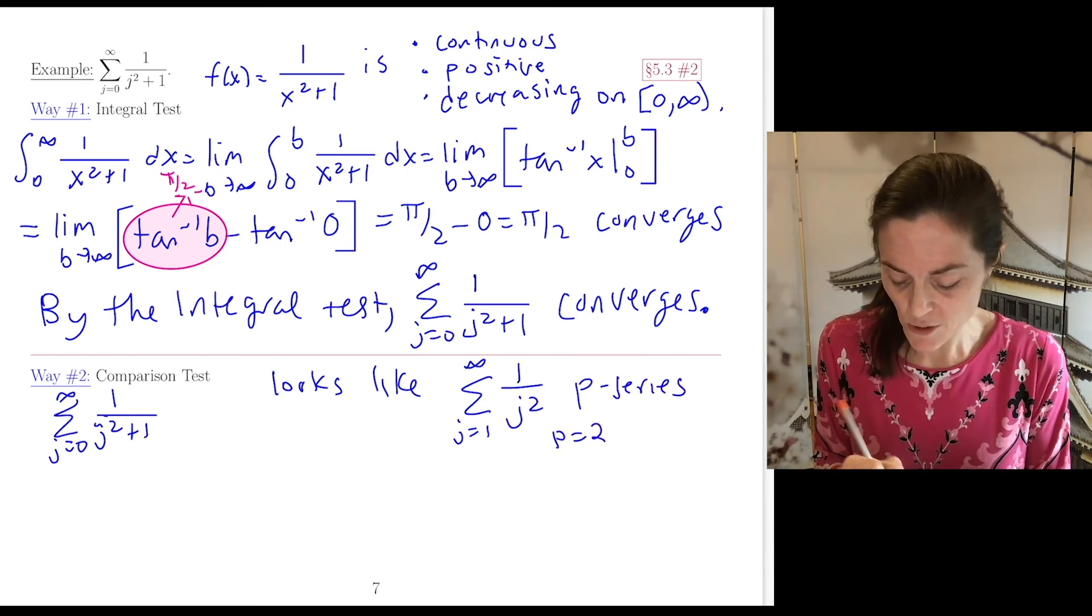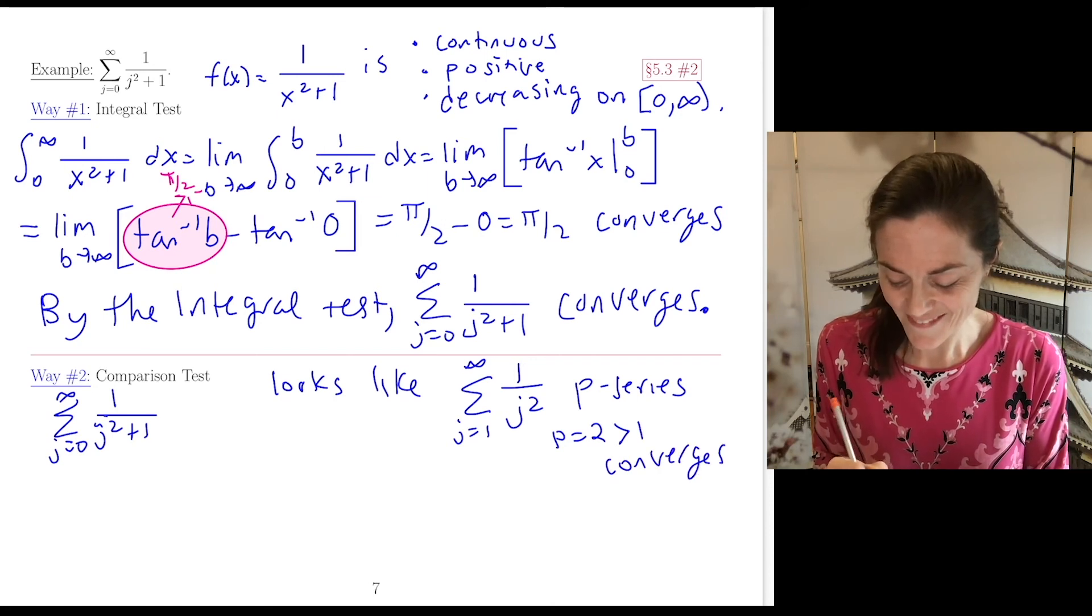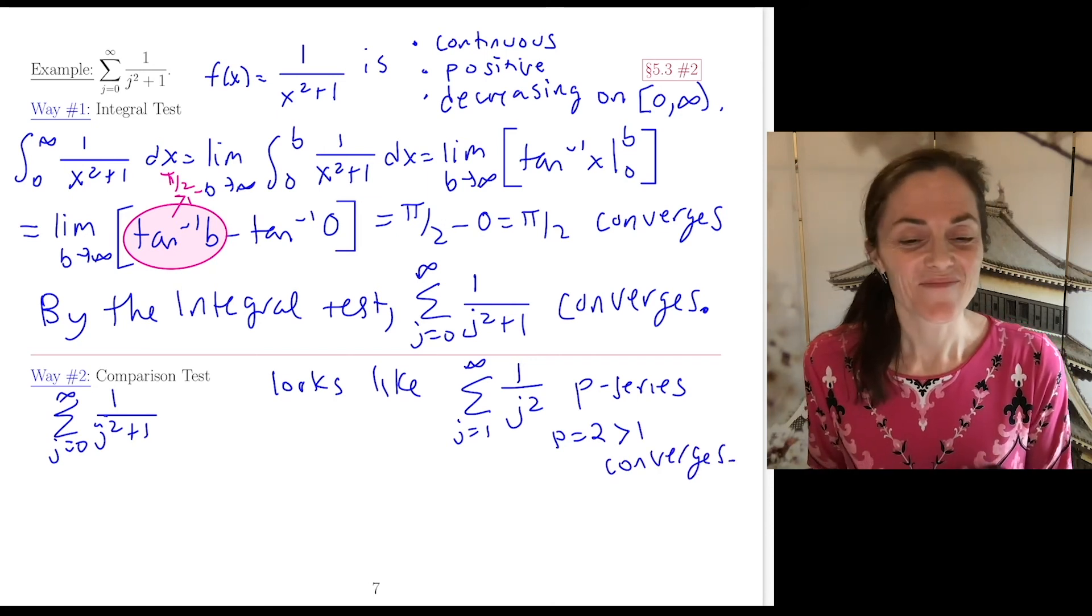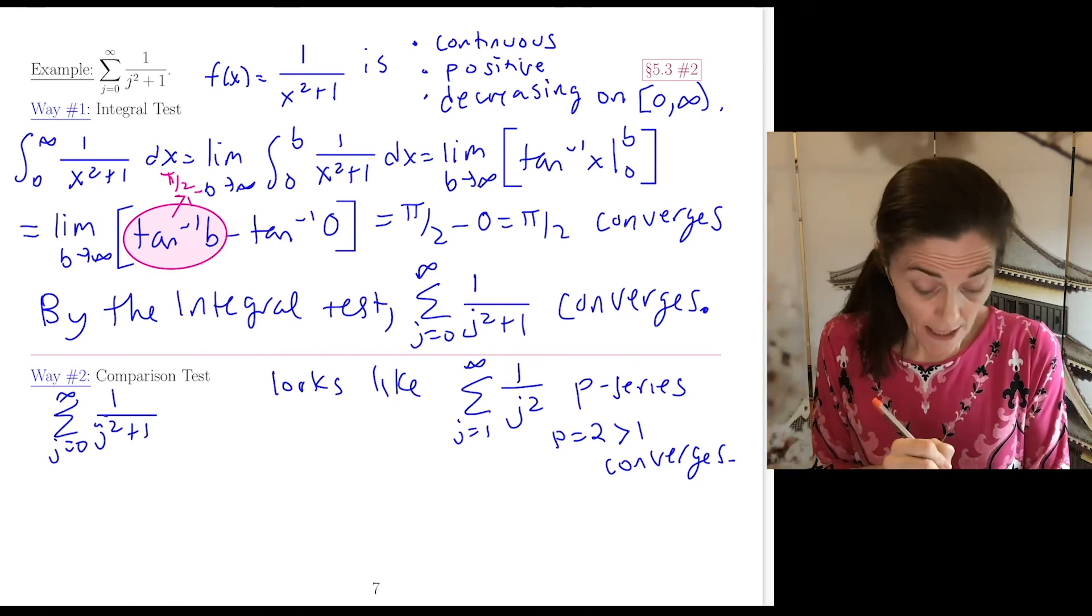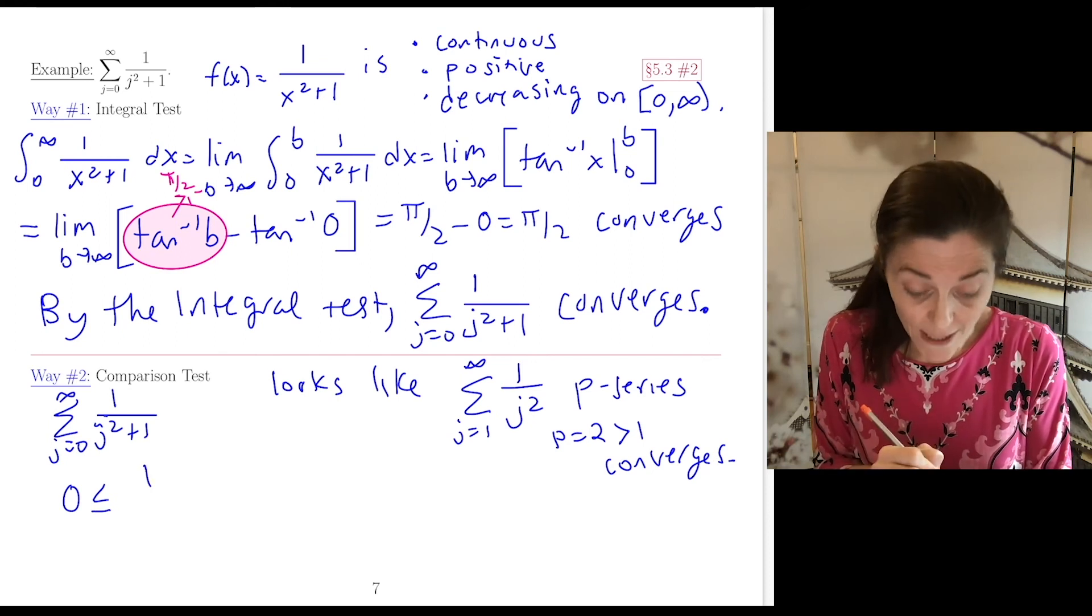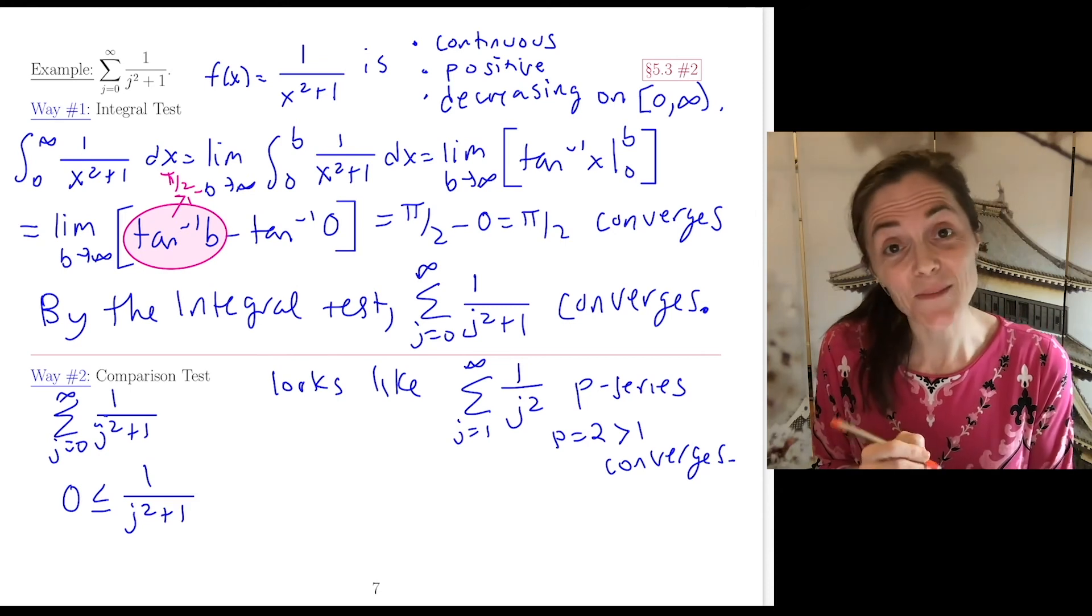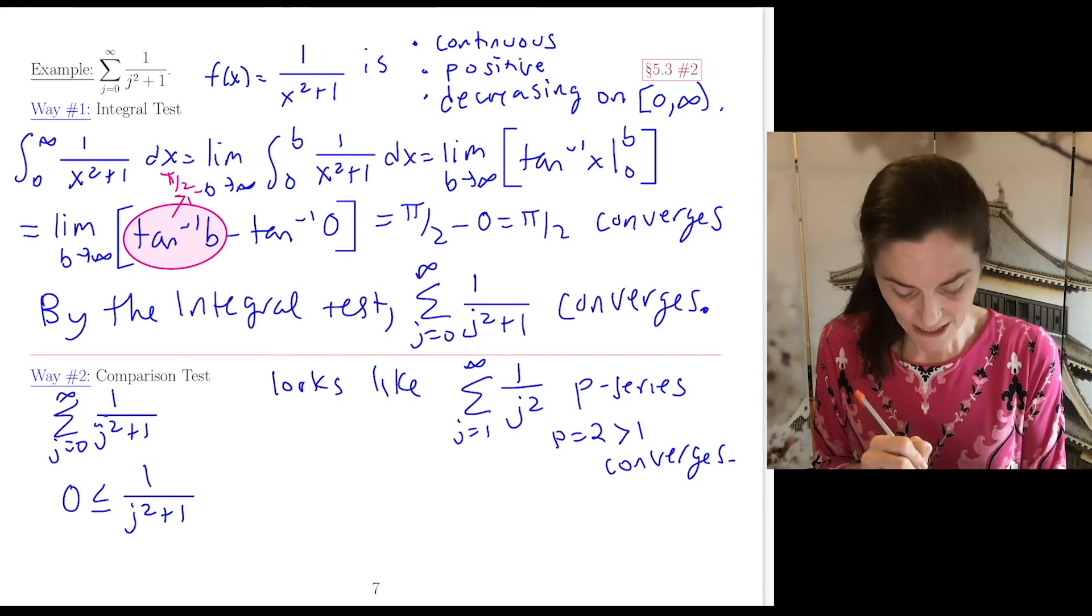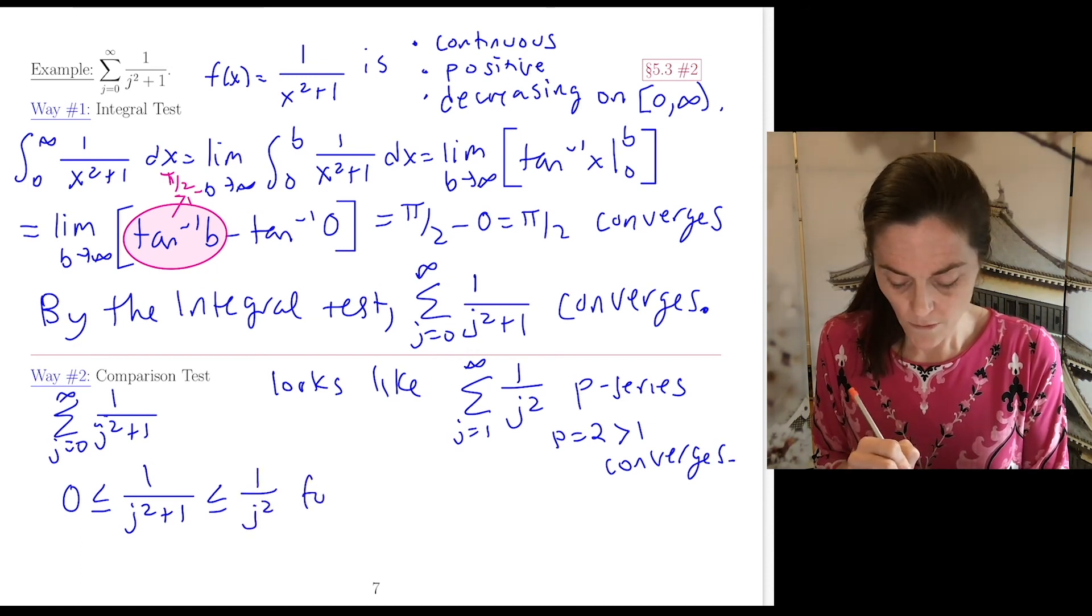We notice p=2, which is bigger than 1, so it converges. We have comparison. Our series has a +1 in the denominator, so we have a bigger denominator and thus a smaller fraction. So 1/(j²+1) ≤ 1/j² for j ≥ 1.